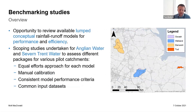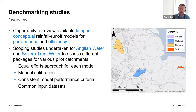Just to talk a bit about the benchmarking studies we undertook. Back in 2019 when we started this work, we had the opportunity to review the available lumped conceptual models for both their performance and efficiency of application. This work started for Anglian Water and also for Severn Trent Water with some scoping studies where we looked at these different packages in respect of various pilot catchments. The pilot catchments are shown there on the map. For Anglian Water, we started with looking at the Gwash and the Tad and then moved on to the Welland with a shortlist of three models.